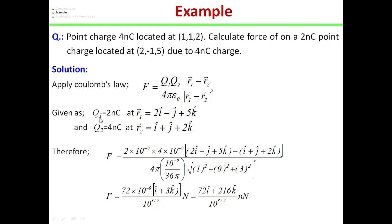To solve this, we apply Coulomb's law: F = Q1·Q2/(4πε₀) · (R1 − R2)/|R1 − R2|³. From the question, Q1 = 2nC at position (2, −1, 5), so position vector R1 = 2î − ĵ + 5k̂. Charge Q2 = 4nC at position (1, 1, 2), so R2 = î + ĵ + 2k̂. Substituting these values, the force works out to (72î + 216k̂) / 10^(3/2) nano-Newtons.